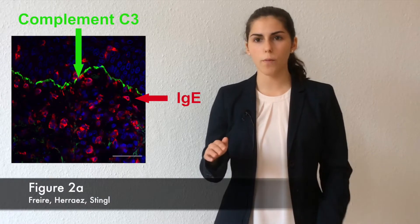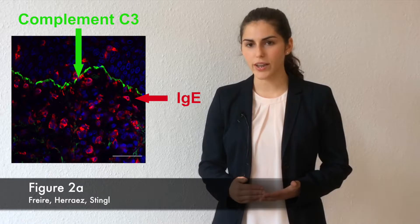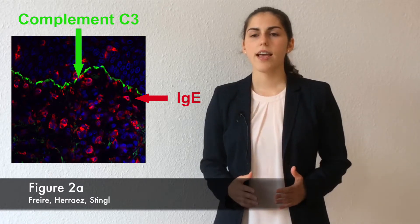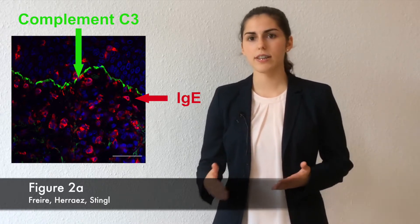We found that in BP skin, while IgG and complement deposit along the dermal-epidermal junction where the BP antigens are located, IgE is by contrast very rarely found in this region and instead occurs bound to cells, which we found to be primarily mast cells and eosinophils. This led to the important question: if the antigens are present along the dermal-epidermal junction and IgE is covering cells that are not necessarily close to the junction zone, how do IgE and BP antigens interact?